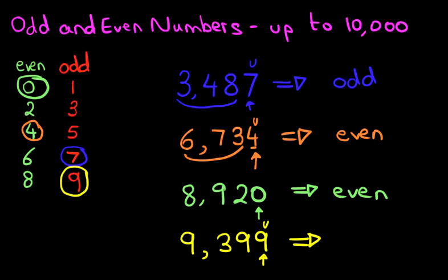And because 9 is an odd number, then 9,399 is also an odd number.